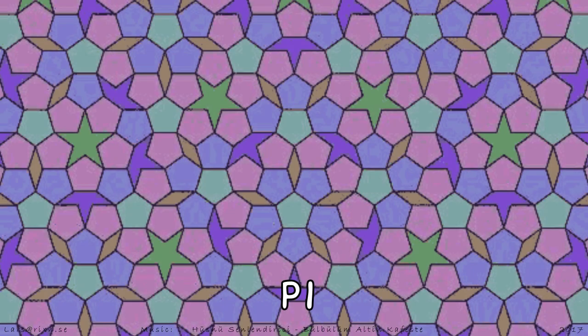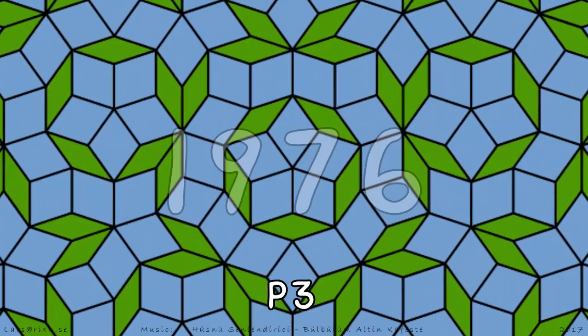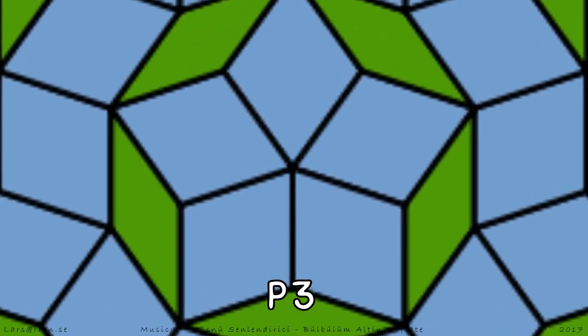But it was Penrose who managed to do it five-fold, using only four tiles in 1974. Two years later, he had scaled it down to only two tiles, the thin and thick rhombus.